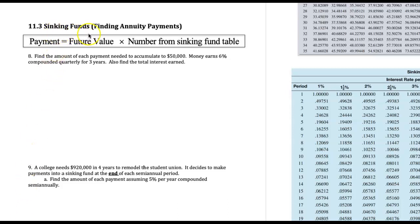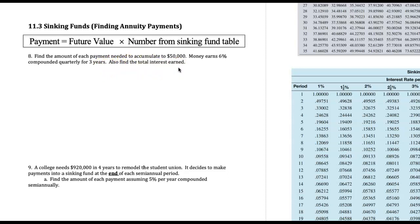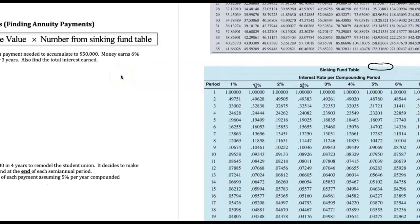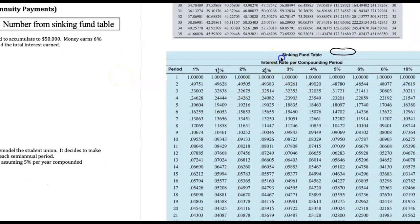We're going to talk about sinking funds, which is another way to talk about finding the annuity payments. In question eight, you have a goal to accumulate fifty thousand dollars. The account has money earning six percent annually, compounded quarterly for three years. We're going to find both the payments needed and the interest earned. Our textbook has a sinking fund table over here on the side.